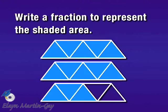Now let's count the number of parts shaded, because that number will be our numerator. So let's count the triangles: one, two, three, four, five — all five in the first whole figure. Then the next one: one, two, three, four, five — all of them in that second whole, so so far ten. And then three in that final whole are shaded, so we have thirteen shaded. Our numerator is thirteen.